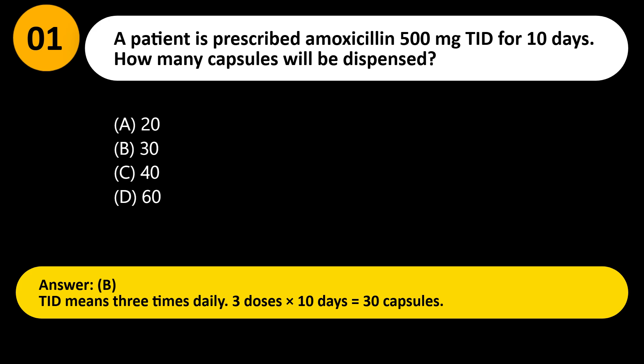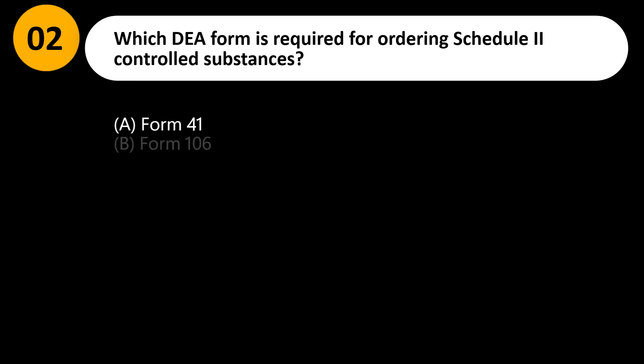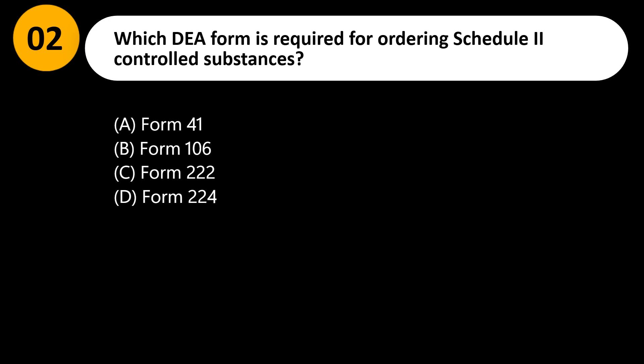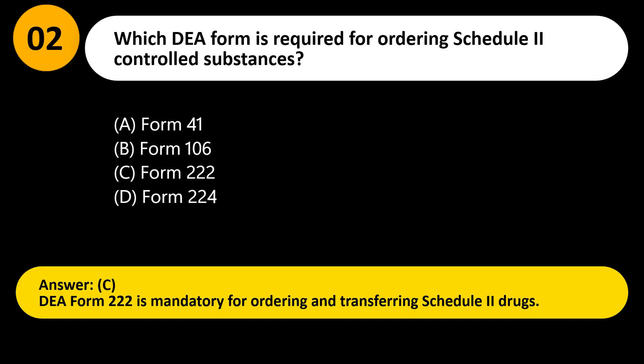Which DA form is required for ordering Schedule 2 controlled substances? A) Form 41, B) Form 106, C) Form 222, D) Form 224. Answer: C. DA Form 222 is mandatory for ordering and transferring Schedule 2 drugs.